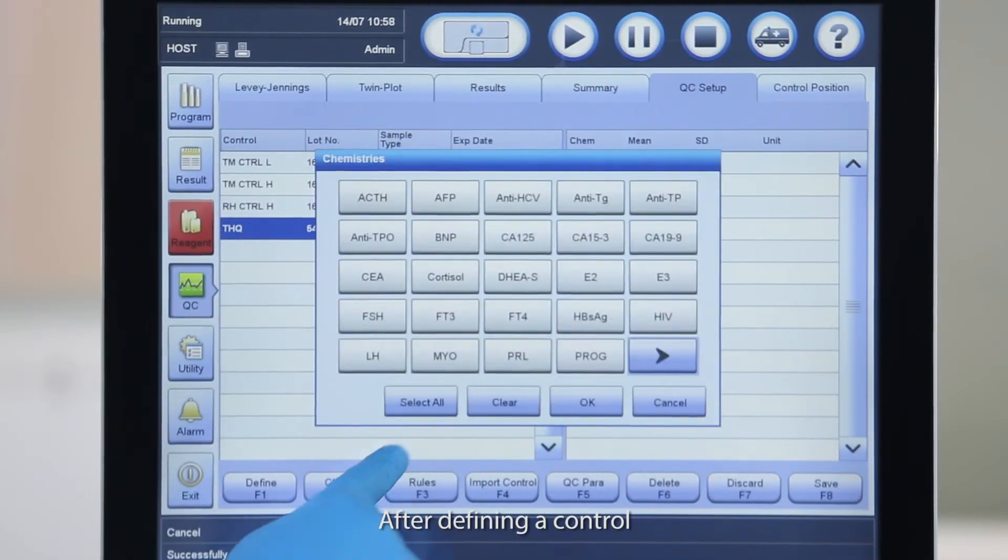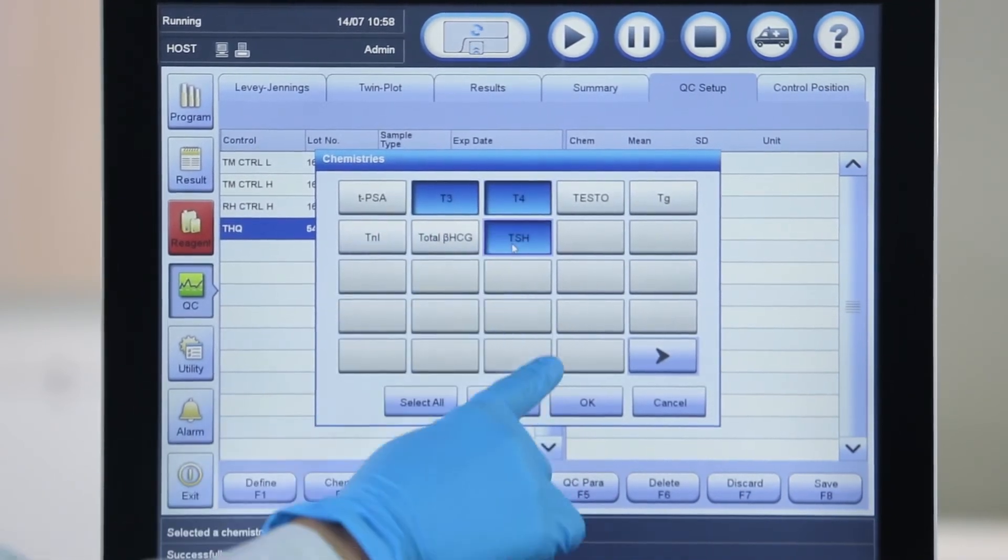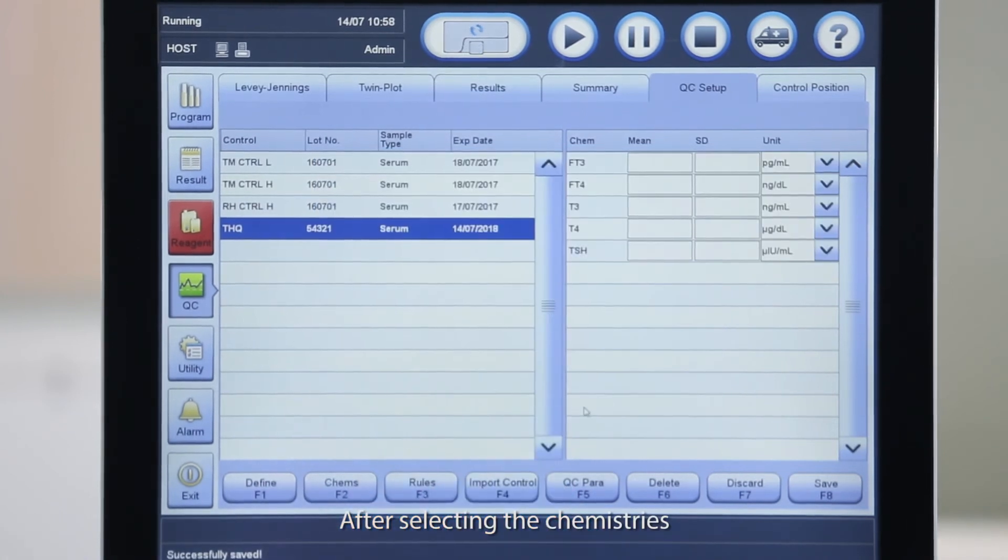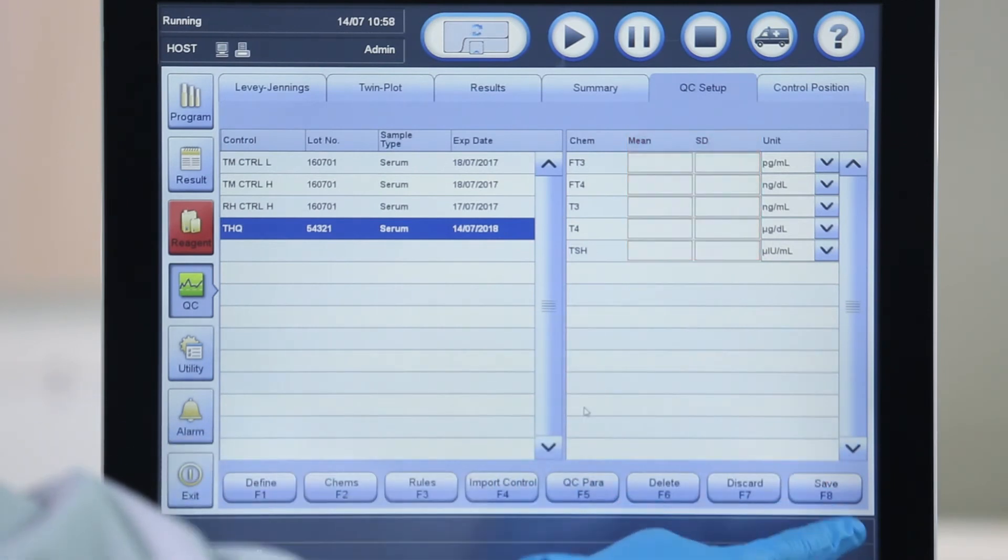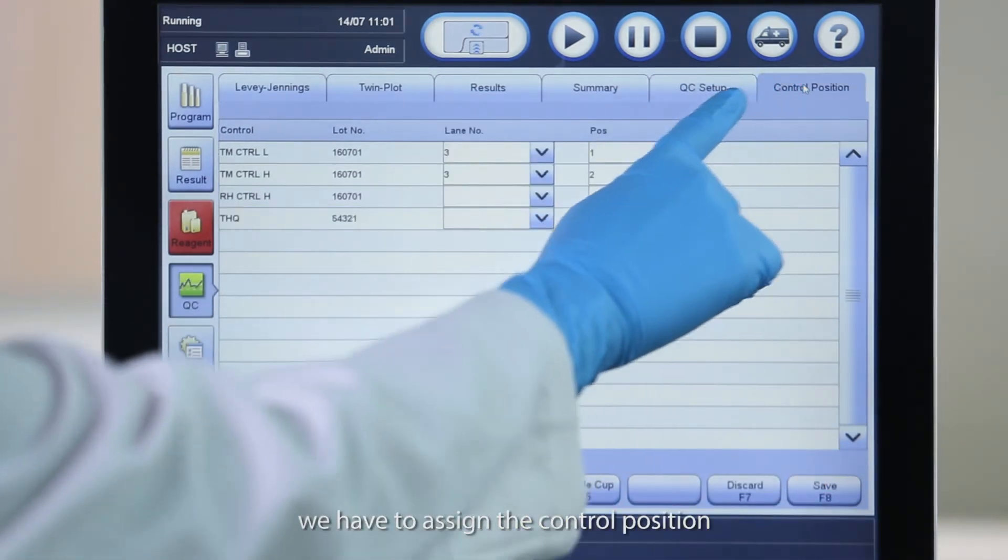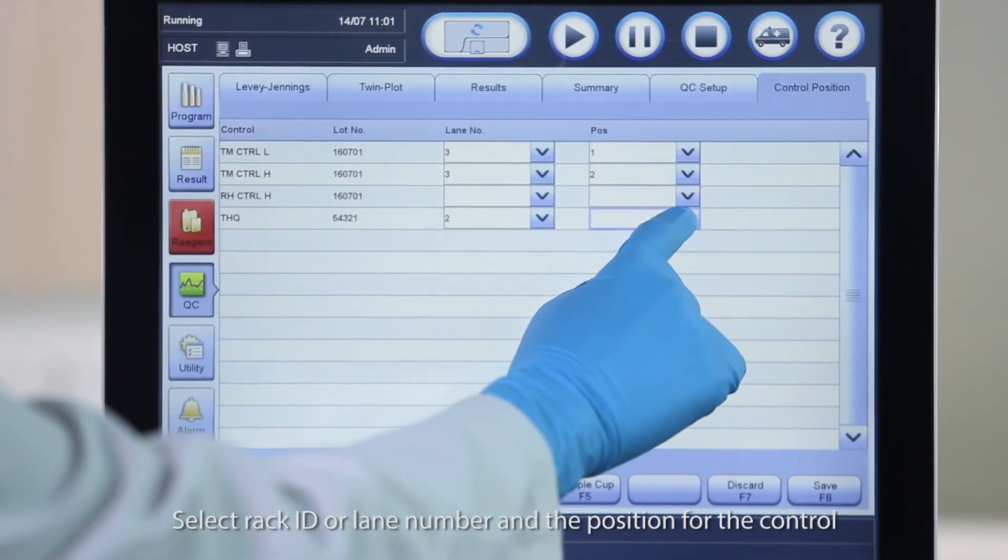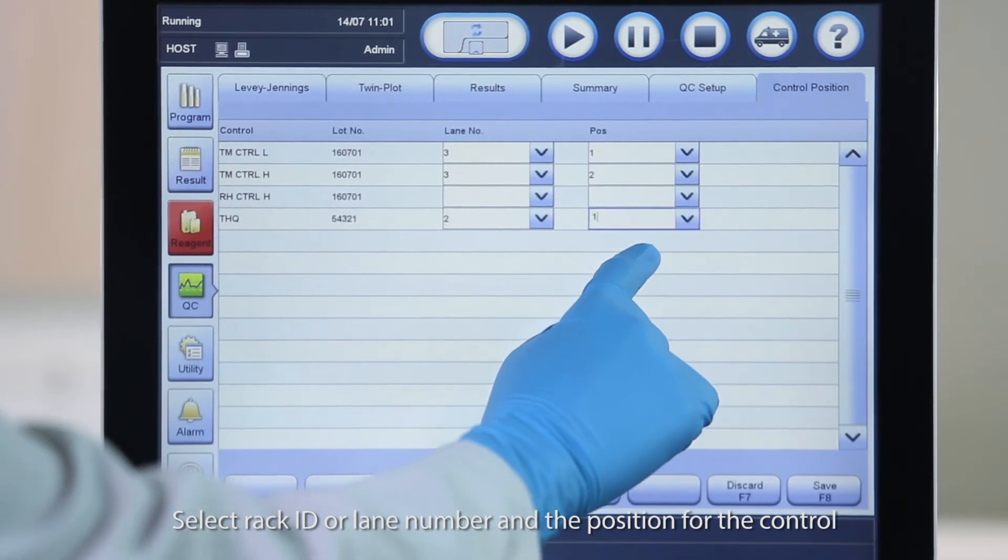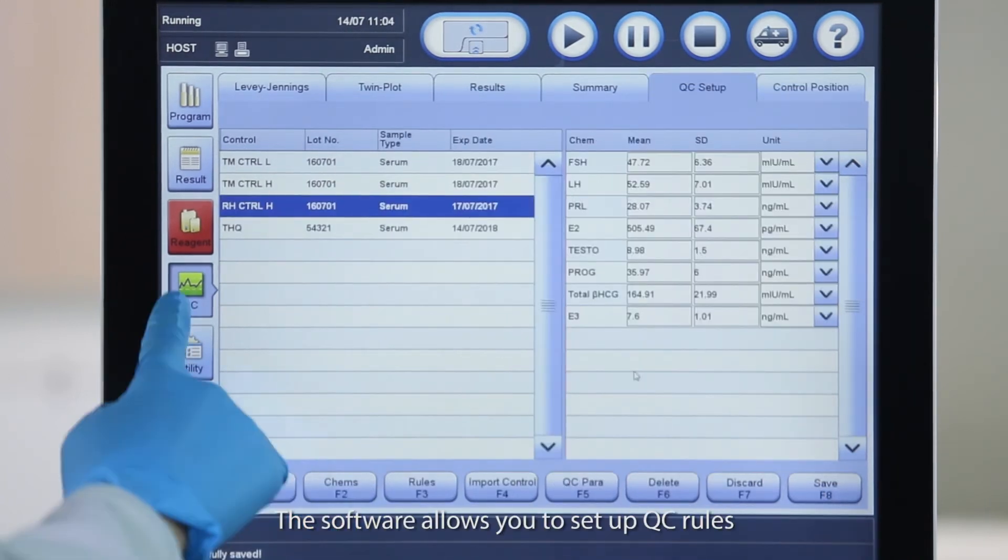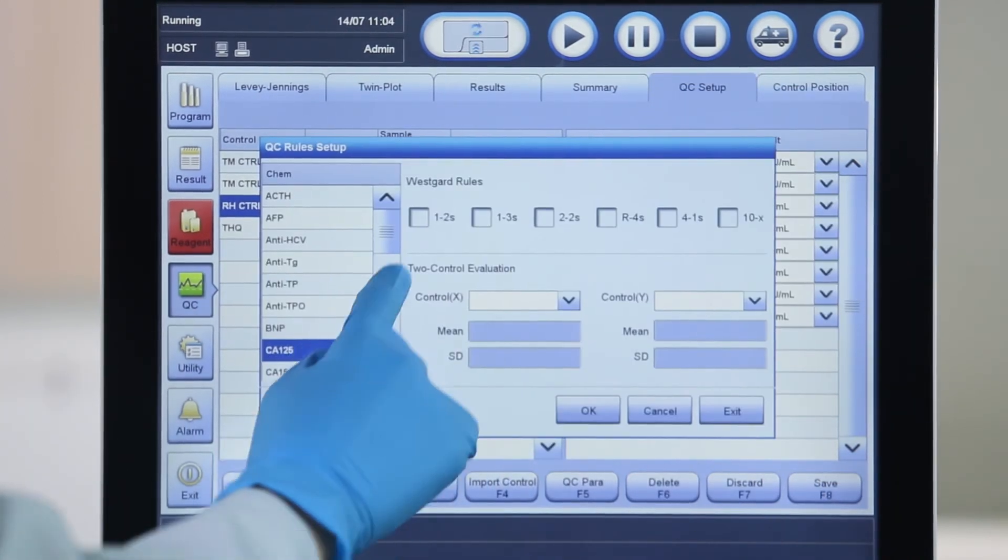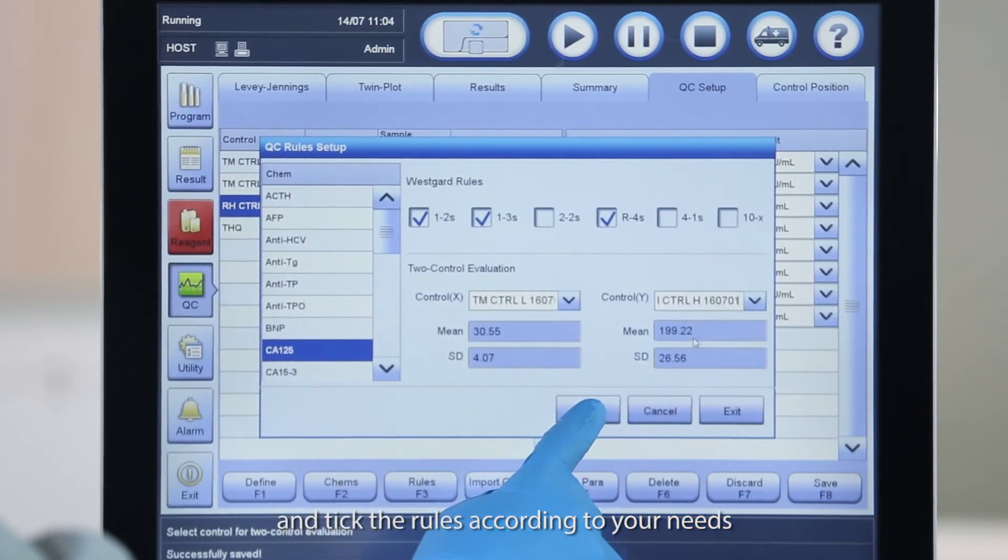After defining a control, you need to select chemistries for which the control will be used. After selecting the chemistries, we have to set up the control concentration and SD. Just like calibration, we have to assign the control position. Go to Control Position page. Select Rack ID or Lane Number and the position for the control. The software allows you to set up QC rules. Open the QC rules setup page and tick the rules according to your needs.